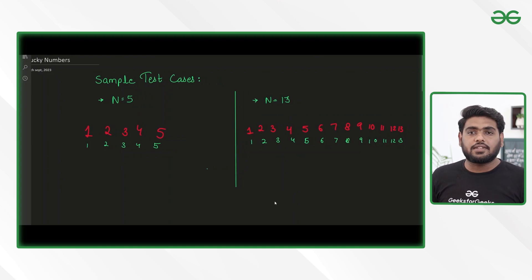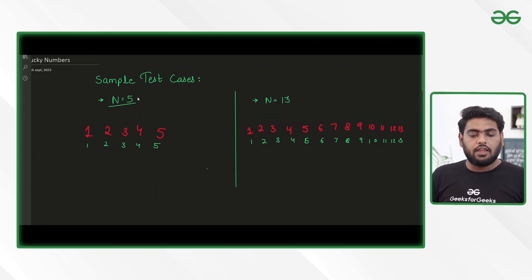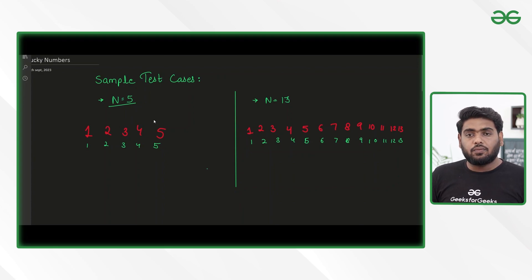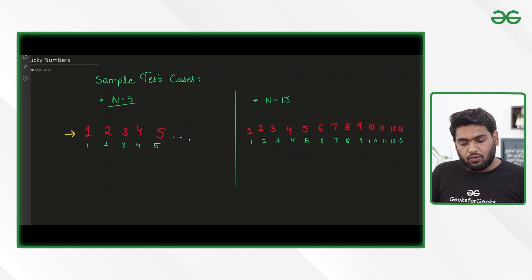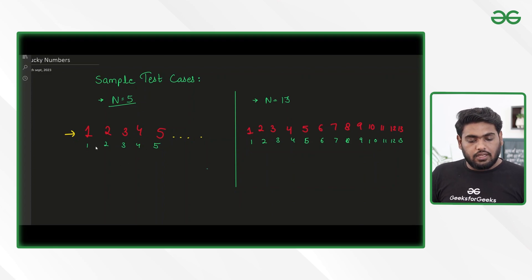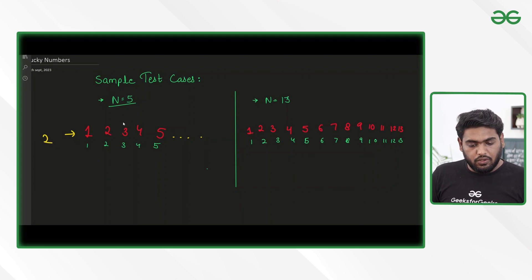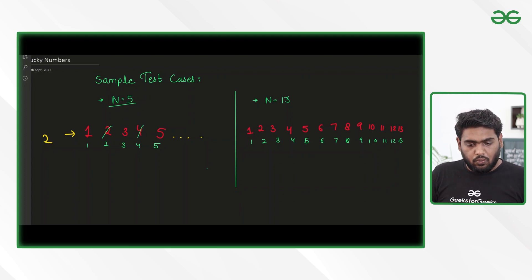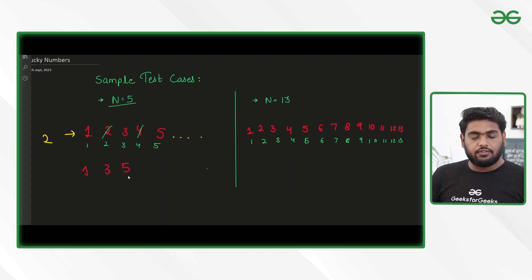Here are the sample test cases. We are given n as 5. We can follow the set of integers going on — I have written it till 5 because we want it till here. The very first thing we have to do is cancel every second element. When we do it, we are going to cancel 2 and 4. So after this pass, we are left with 1, 3, and 5.